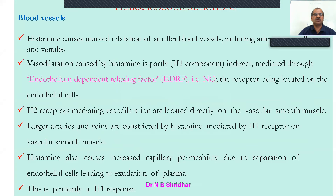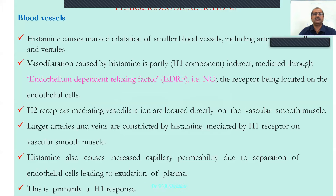Yesterday we discussed how histamine is dissipated and its fate. Today we will see the pharmacological action of histamine, because histamine is an autacoid. Autacoids are local hormones, produced locally from histidine, and histamine is released from the mast cells of the body.